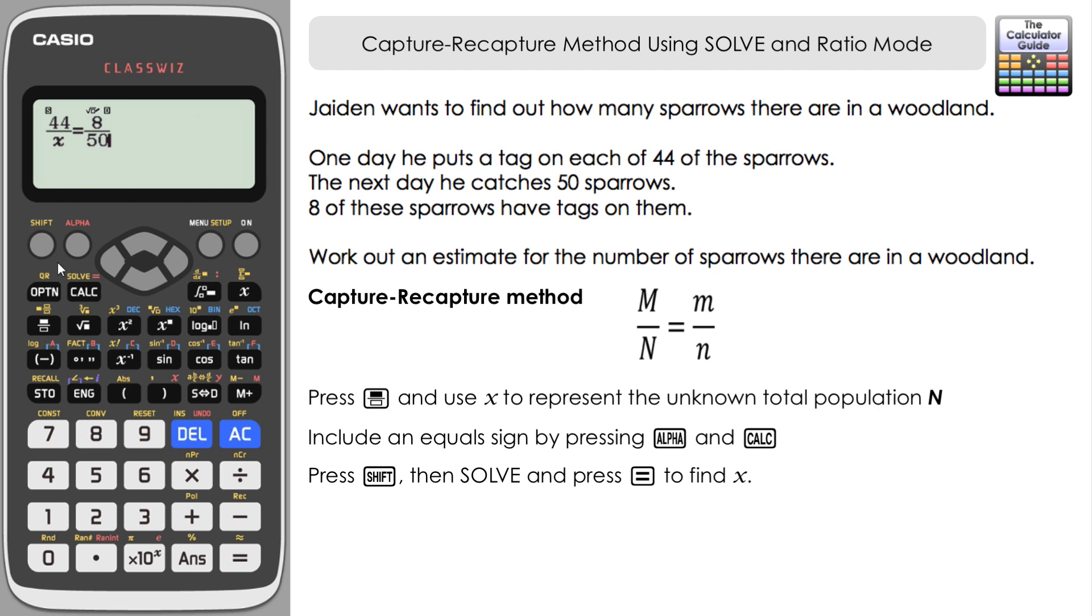Now we want to solve for x. If you press shift and SOLVE, at the moment x is zero, but all we need to do is press equals for the calculator to work that out for us, and that's worked out x as 275. So what that's telling us is the estimate of the population of sparrows in this woodland area is 275 sparrows in total. Again, it is an estimate—we don't know the exact number. We're going to assume that they're in proportion with the recapture that we did where we got 8 out of 50 back from our initial tags.